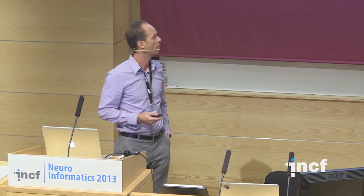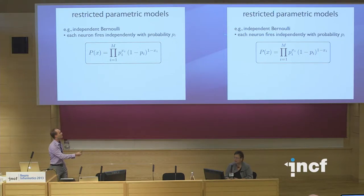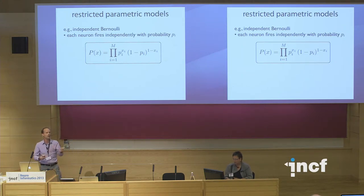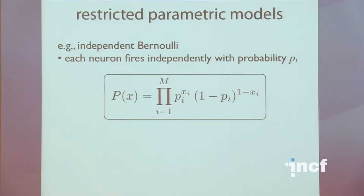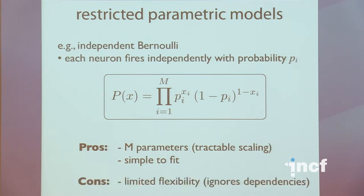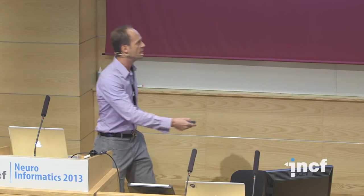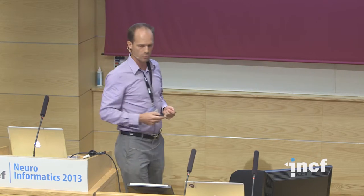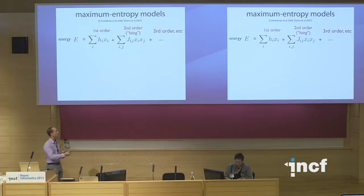One approach that's been followed in the literature is to look for restricted parametric models. The simplest would be an independent Bernoulli model: each neuron just fires independently with some probability p, like a bunch of biased coins. For each neuron, whether it's spiking has a single parameter that determines its probability of spiking. This model is very simple to fit — all I have to do is compute the relative fraction of times each neuron spiked — and there are only m parameters, so it scales very tractably to large populations.